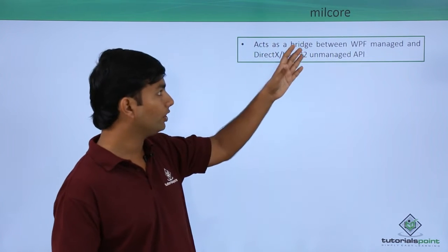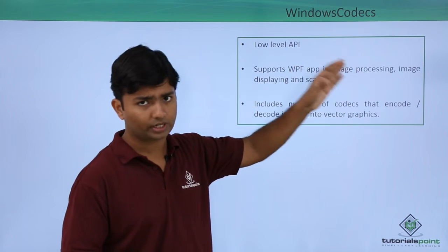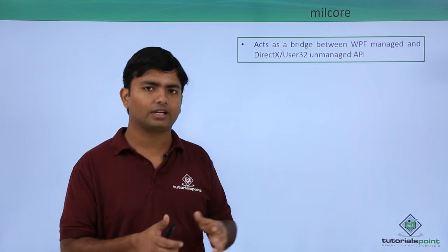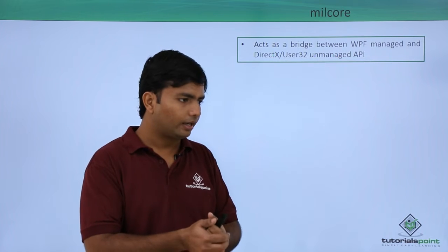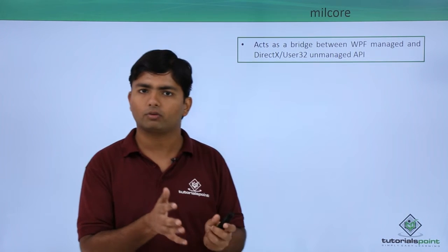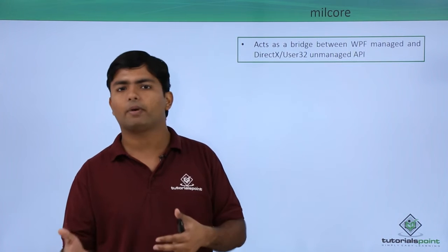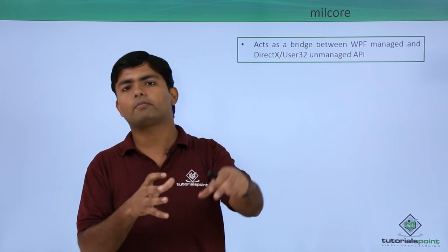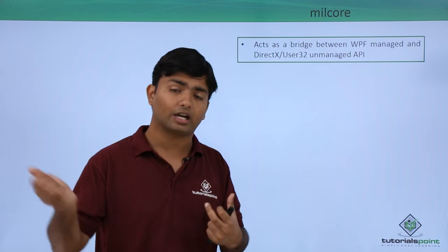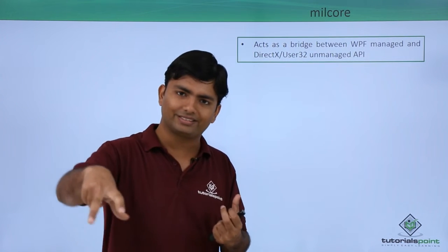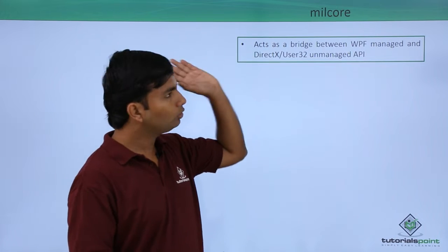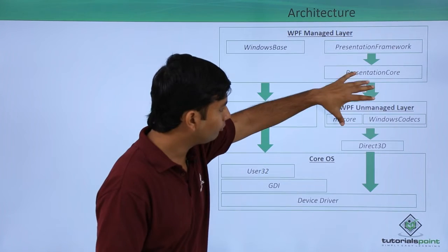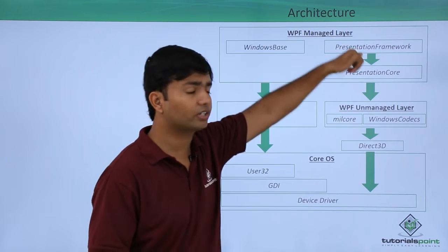Now we will talk about the unmanaged layer, in which we have MilCore DLL and Windows Codec. Let's talk about MilCore first. As I said, it's an unmanaged code, so basically it will be a bridge. If I know about the .NET framework, .NET framework does managed code and unmanaged code. Unmanaged code uses pointers. Managed code also uses some memory location but you don't directly access it. In unmanaged code, you use pointers to directly access the system components.